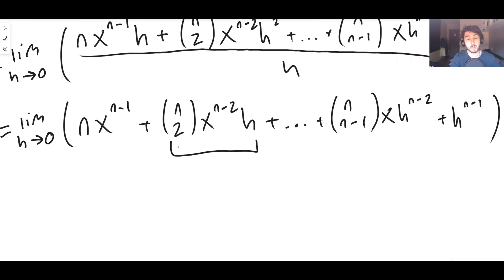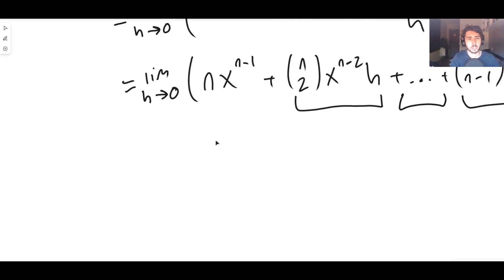As h goes to zero, this whole term becomes zero. All of the terms that are inside here become zero because they all have h's in them. And actually if we take the limit at this point, we just get left with n times x to the n minus one, which is what we were trying to prove.